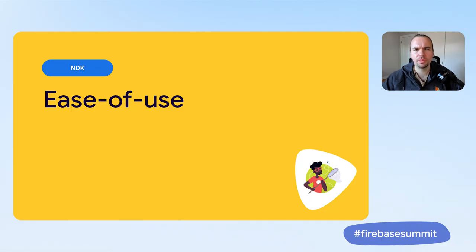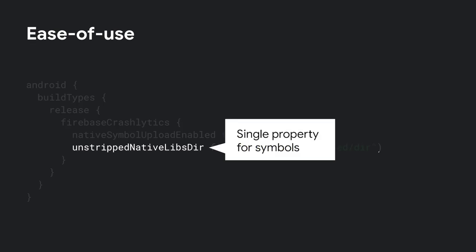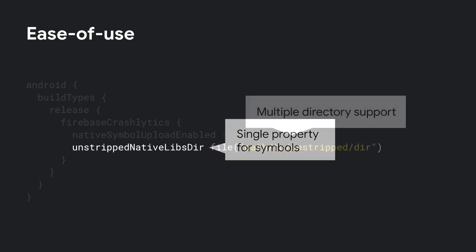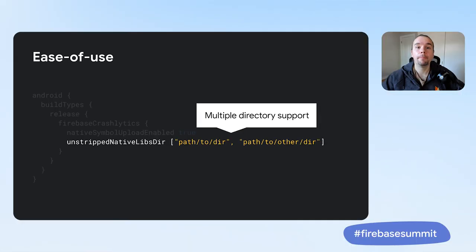These updates bring huge improvements to reliability and quality, but perhaps in the past your custom project structure prevented you from trying the Crashlytics NDK SDK. It is now easier than ever to configure the NDK SDK for your project — only a single property dictates where to look for symbol files, and you can specify multiple directories to scan. No longer do you have to copy libraries built outside of your project into internal build directories. Also, if your project has an NDK dynamic feature, the Crashlytics NDK SDK can now be delivered as part of that feature, reducing the size of your app.